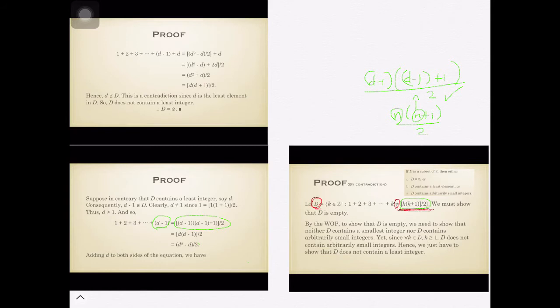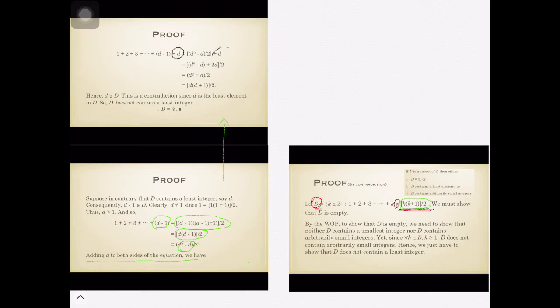Knowing that we can cancel out the minus one plus one, we're left with the numerator d times d minus one, all over two. Simplifying the numerator, we'll have d squared minus d, all over two. Now, if we add d to both sides of the equation, we'll have d squared minus d all over two, plus d.